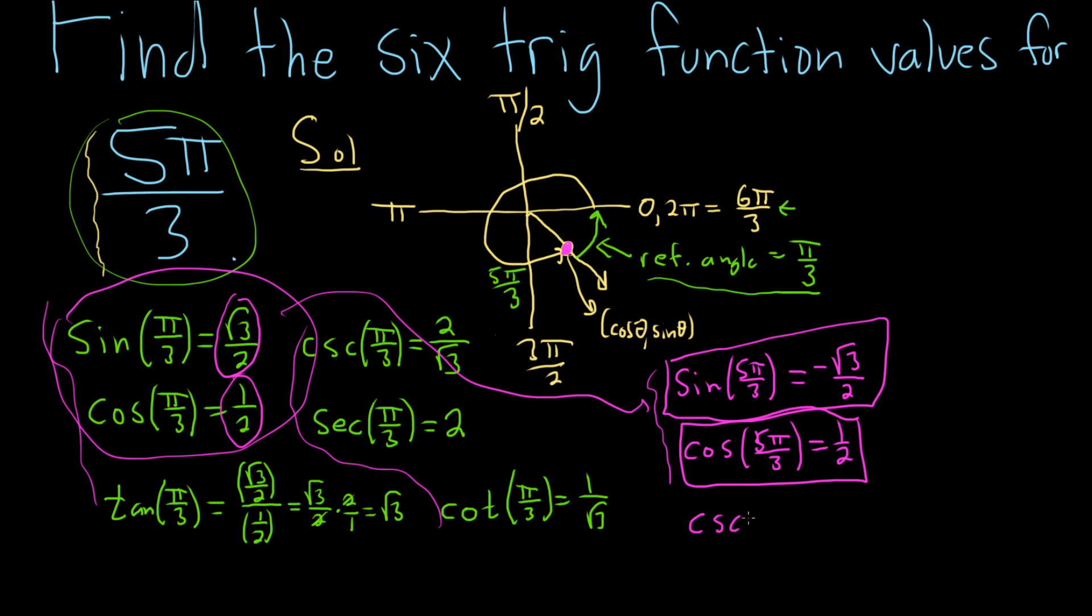So cosecant of 5π/3, well, you just flip this one, right? So it'll be negative 2 over root 3. So notice I didn't even use the ones I wrote down, so that was kind of a bit of a waste, but it was good practice anyways.